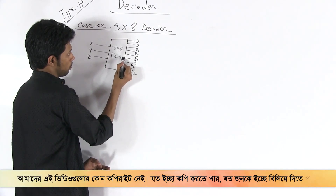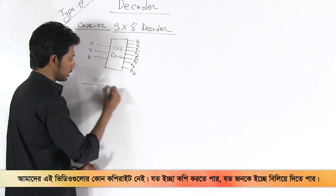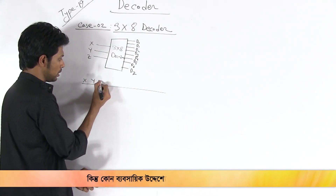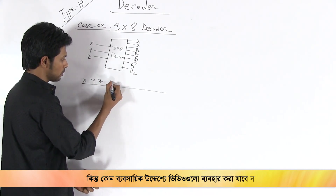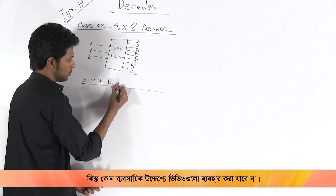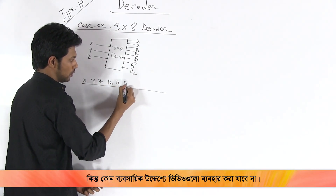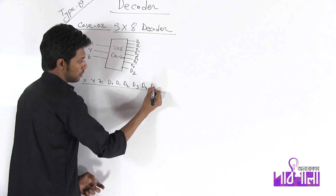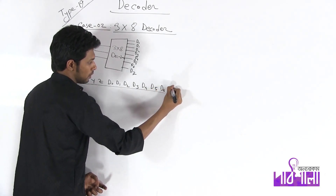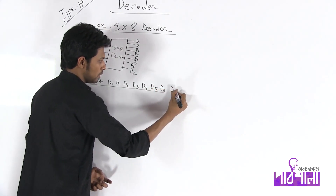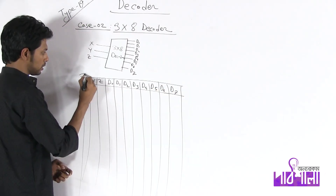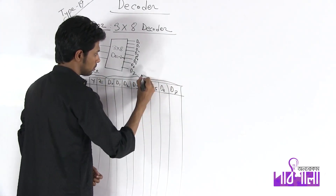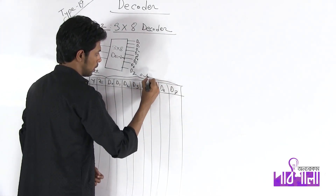Let's look at the truth table for the 3-into-8 decoder. Columns are: X, Y, Z for inputs, and D0, D1, D2, D3, D4, D5, D6, D7 for outputs. Input A is listed. When the input is 0, 0, 0...